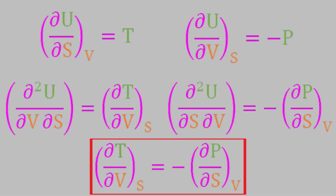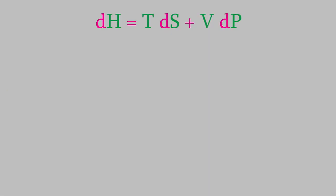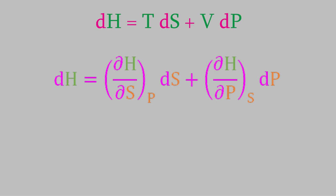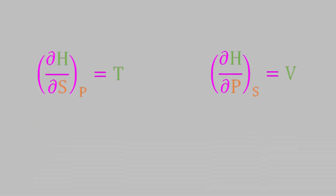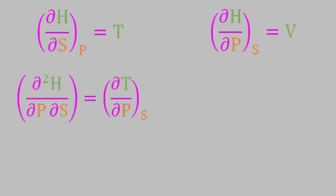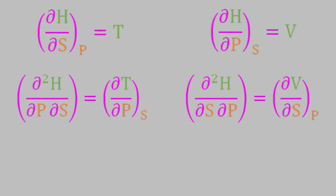Finally, let's perform this same process starting with our expression for the enthalpy. Just as before, we start by taking the total derivative of the enthalpy, with the variables S and P this time. If we compare this expression to the original equation for enthalpy, we can set the partial derivatives to variables in the equation. The first partial derivative is equal to T, and the second one is equal to V. Finally, we'll take the cross derivative for each of these expressions — the first one with respect to P, and the second with respect to S. Setting the two cross derivatives equal to each other gives us our fourth and final Maxwell relation.